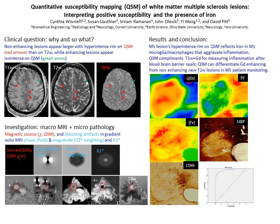In summary, clinical MS MRI protocols should include the gradient echo sequence, which will allow the generation of QSM to monitor the smoldering inflammation behind the sealed blood-brain barrier and to identify acute lesions with an open blood-brain barrier without the use of gadolinium.